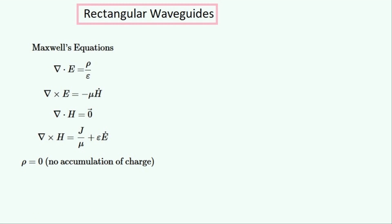We'll simplify these equations using the following known facts. Firstly, that there is no accumulated charge in the waveguide anywhere, so this variable, which is the charge density ρ, is set to zero.